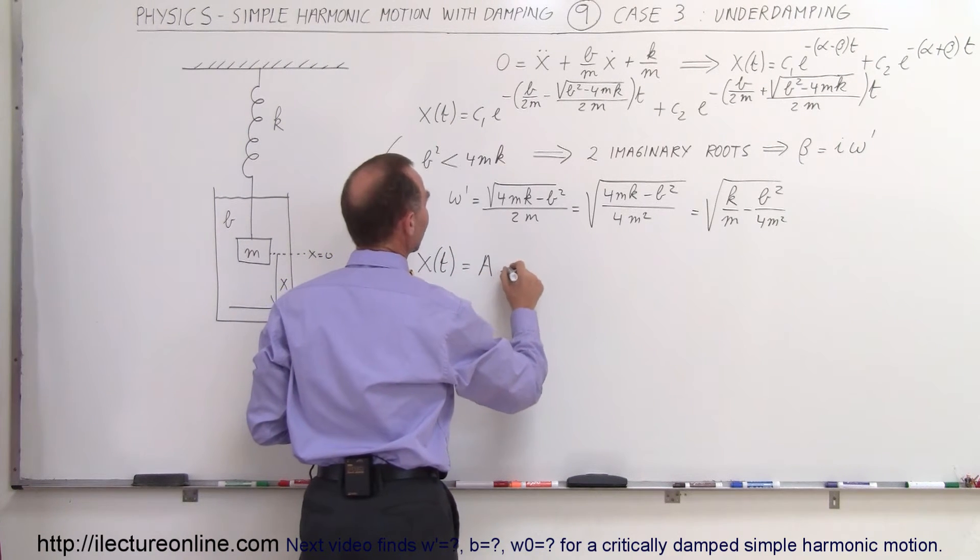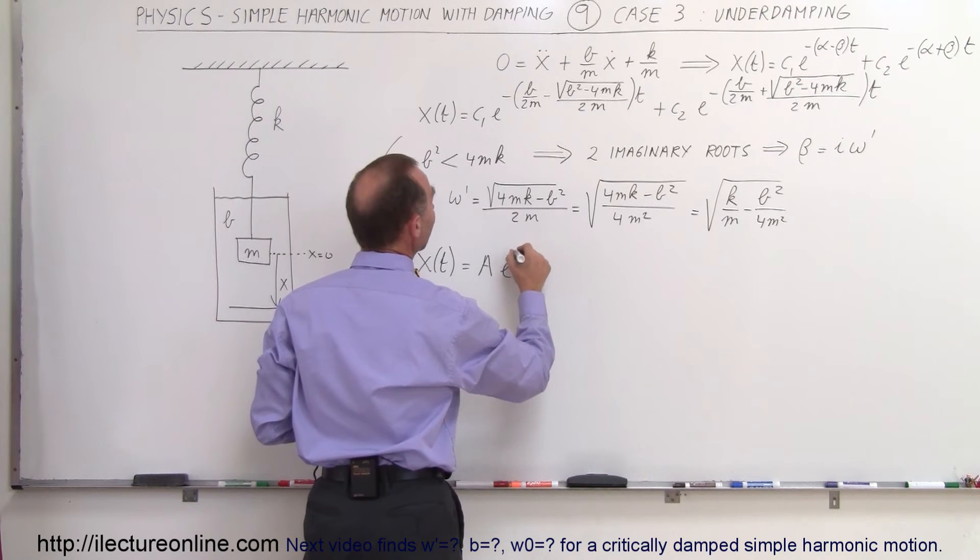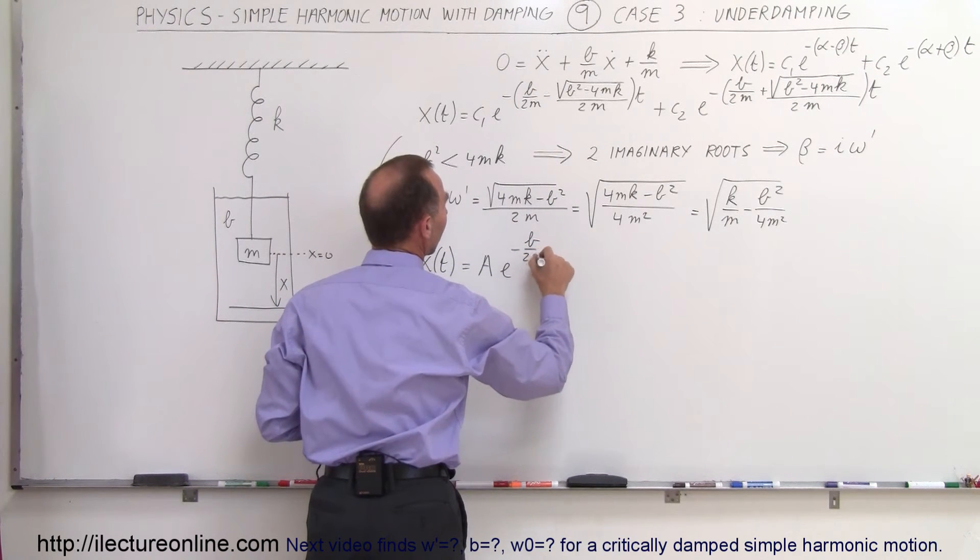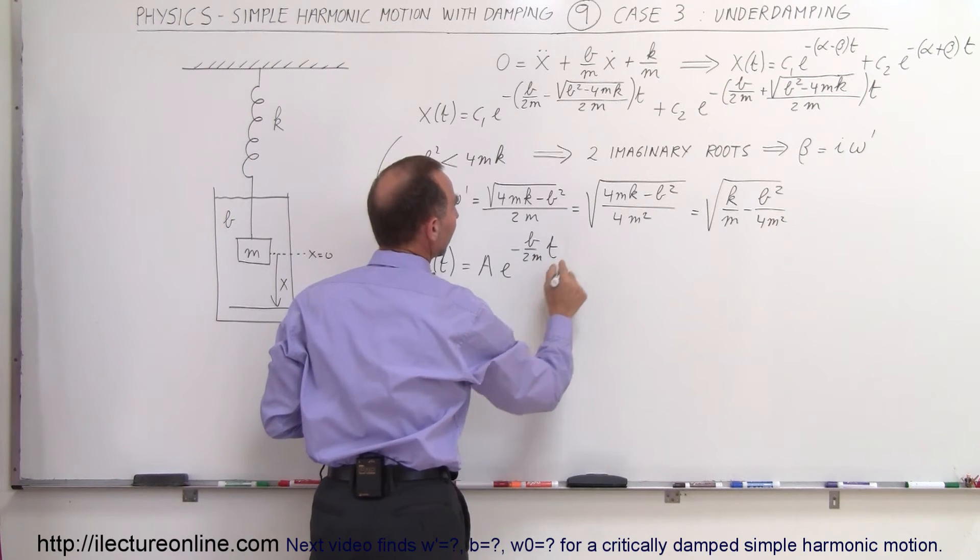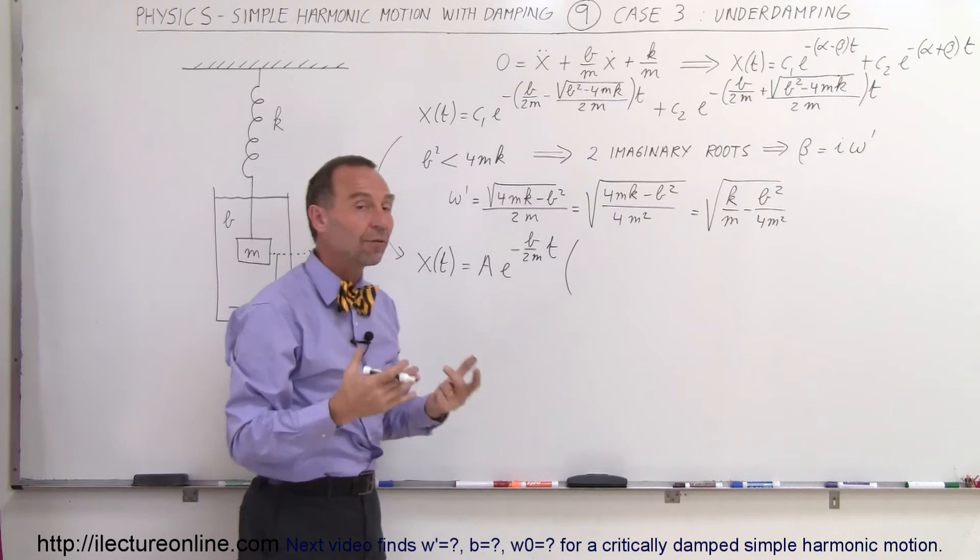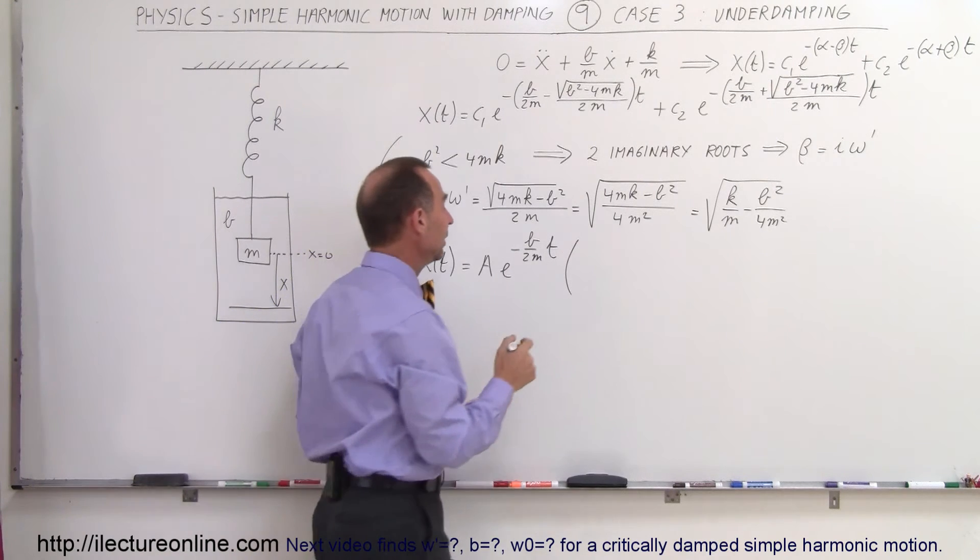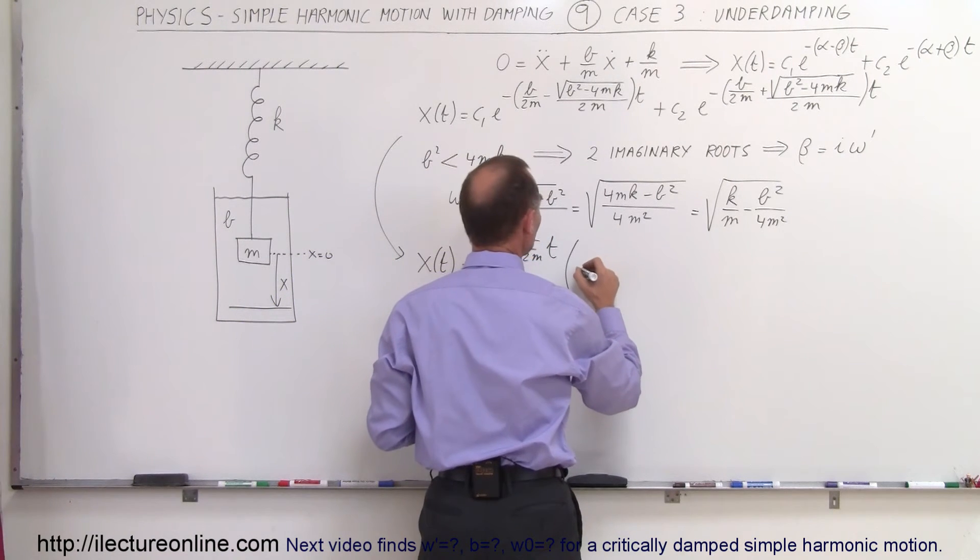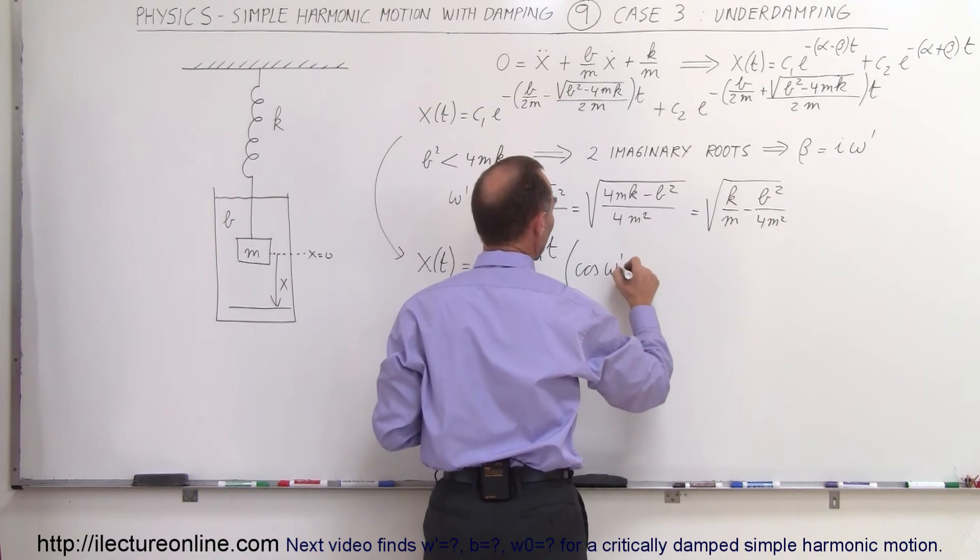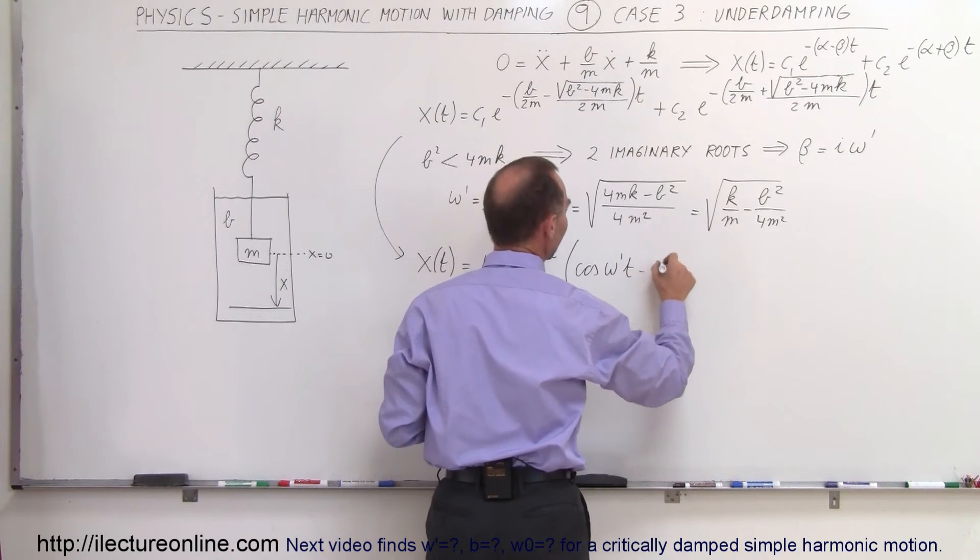times e to the minus B over 2m times the time, times, now the imaginary part is now going to be written as a sum of the sine and the cosine, and that can then be reduced to the cosine of omega prime t minus the phase angle.